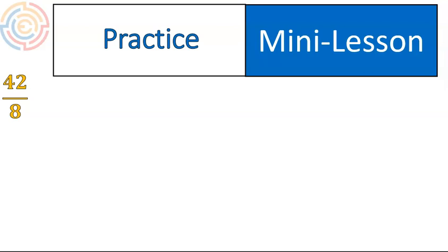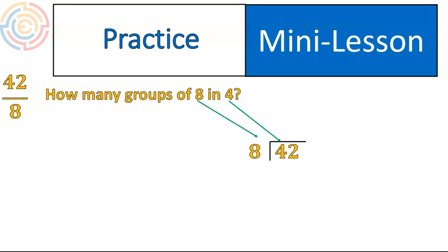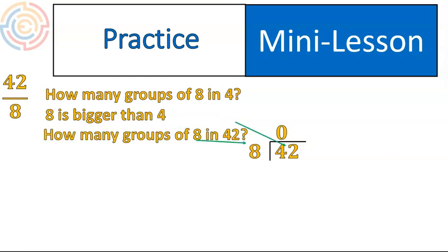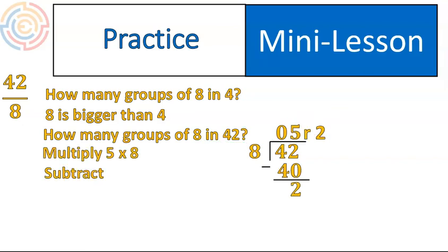Hey, are you back? Did you pause it and do it? 42 divided by 8 would look like this. Again, how many groups of 8 inside of 4? 8 is bigger than 4, so we put a 0 there. Then we say, how many groups of 8 inside of 42? Well, there's 5. 5 times 8 is 40. We subtract, and we have a remainder of 2. There it is. If that's what you got, then you are ready for today's lesson, that's kind of a prerequisite.